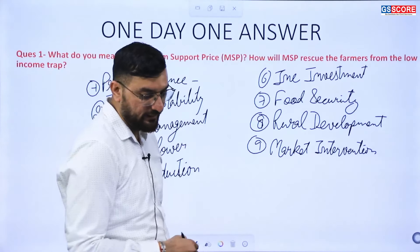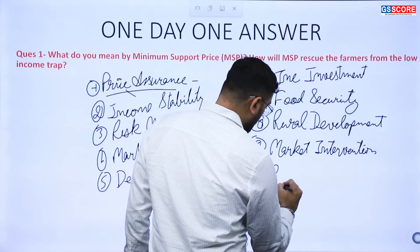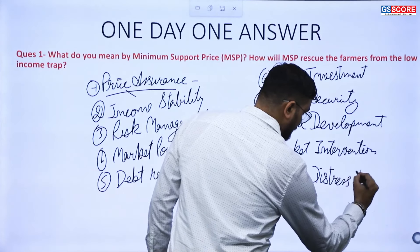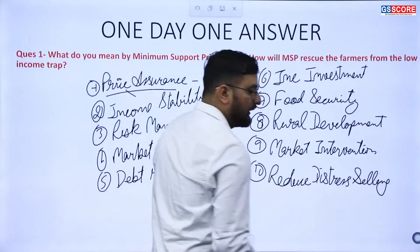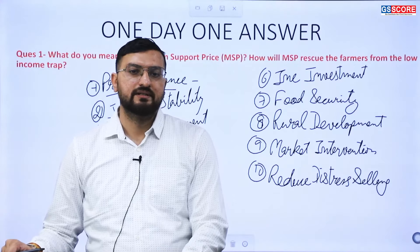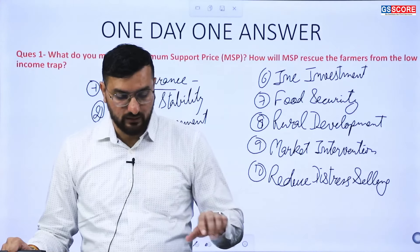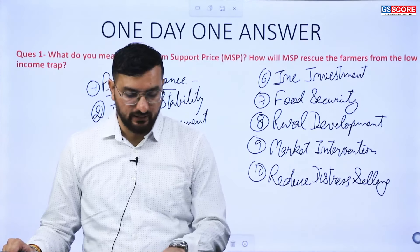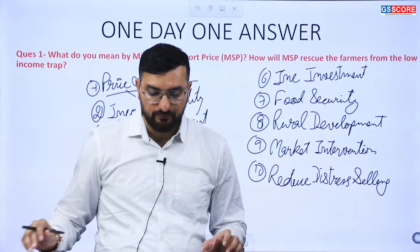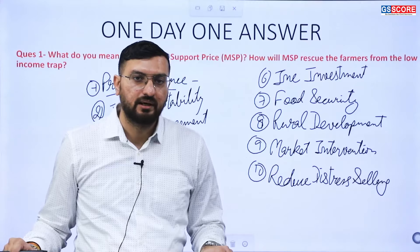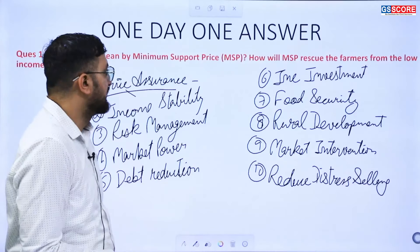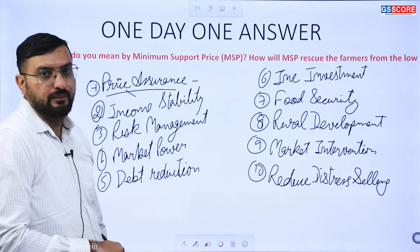Finally, MSP helps reduce distress selling. When farmers lack storage facilities or face urgent financial needs, they are often forced to sell at very low prices. With MSP, selling to the government remains a viable option, protecting them from having to accept exploitative market prices. These are the key points to write in the answer to the 2024 UPSC Mains question on MSP and the low-income trap.